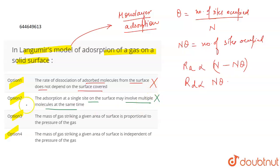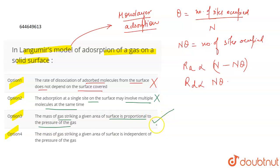The third statement says the mass of the gas striking a given area of the surface is proportional to the pressure of the gas. This is true — the mass of gas striking that area is indeed affected by and proportional to the pressure of the gas.